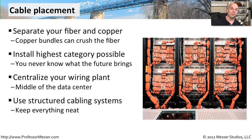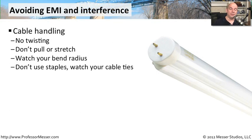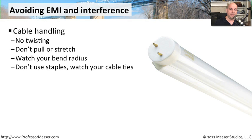You can then worry about other types of issues when troubleshooting a problem on the network. Once your cable is in, make sure you're not getting electromagnetic interference or other types of interference that could cause problems. Whenever you're putting the cable in for the first time, be sure that you don't twist the cable, don't cause any kinks, and don't pull or stretch it. This could cause a problem with the copper or with the fiber, leading to connectivity issues all the way through.